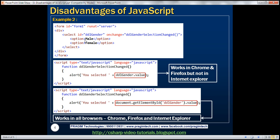Let's look at another example. Here I have a piece of HTML — a server-side form tag with a div element, and within that div we have a select element with two options: male and female, creating a drop-down list with the ID DDLGender. Whenever the selection changes, we call the DDLGenderSelectionChanged client-side JavaScript function, which displays an alert saying 'you selected' whatever value was chosen. This piece of JavaScript will work in Chrome and Firefox, but not in IE.